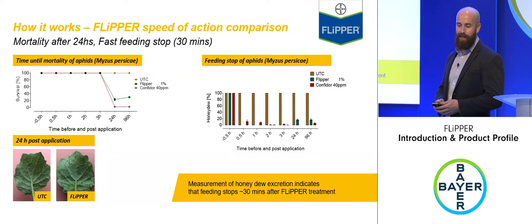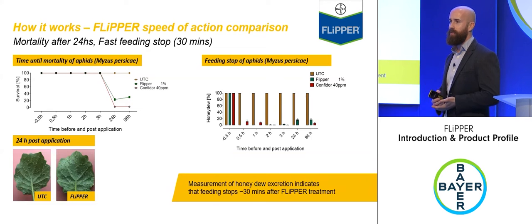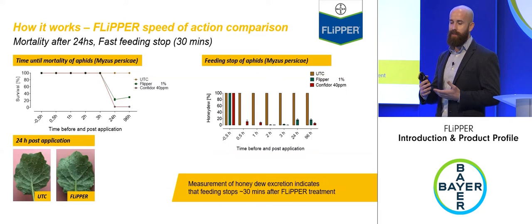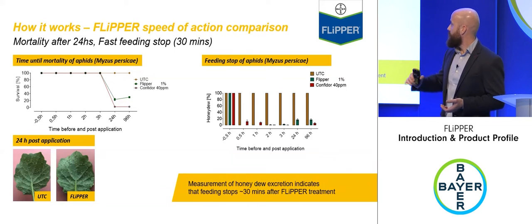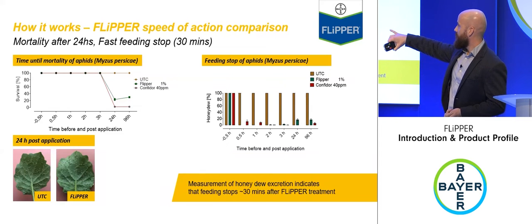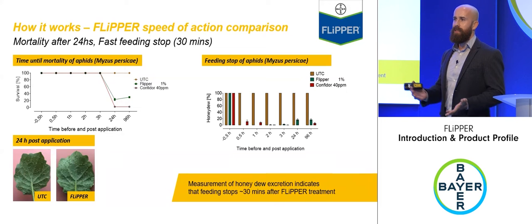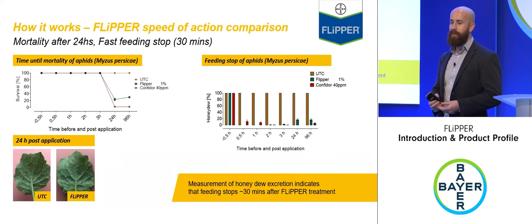Bayer noticed the cessation of feeding was very quick and wanted to understand it further. Looking at aphid mortality, compared to Confidor — a neonicotinoid — Flipper is actually very fast-acting, with the insect dead within 24 hours.